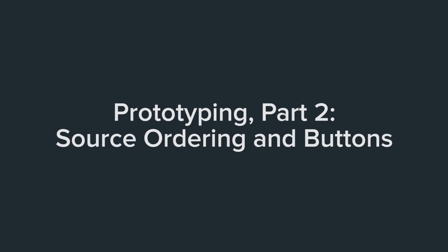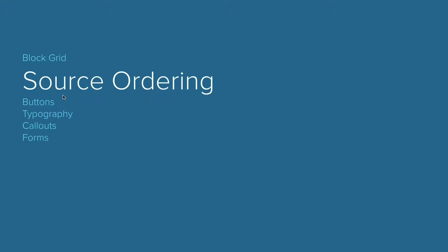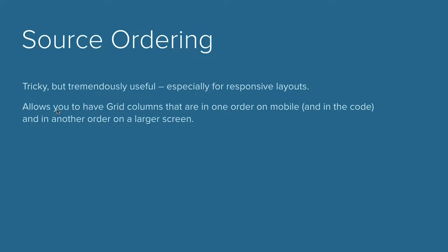There were some questions around source ordering, push and pulling, and all that, so we're going to talk about it here. Source ordering is a little tricky to wrap your head around — it's just a little bit unconventional. You're pushing and pulling and manipulating rows. It may take a couple of times reading the docs to make sure you're doing it correctly, but it's really useful, especially for responsive layouts.